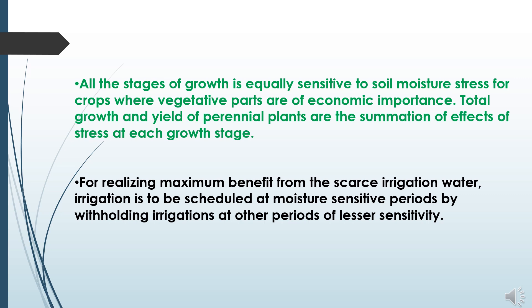Total growth and yield of perennial plants are the summation of effects of stress at each growth stage. However, adequate water supply is essential at flower bud initiation, flowering and fruit set, and flower bud formation. Interestingly, yield can increase due to restricted water supply prior to flower bud initiation in the case of citrus and mango. For realising maximum benefit from scarce irrigation water, irrigation should be scheduled at moisture sensitive periods by withholding irrigations at other periods of lesser sensitivity. Such irrigation schedules along with improved practices increase the water use efficiency in crop production.